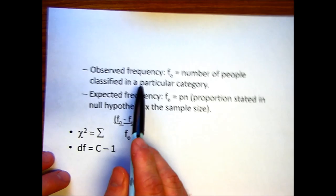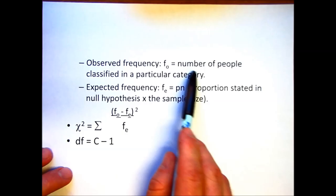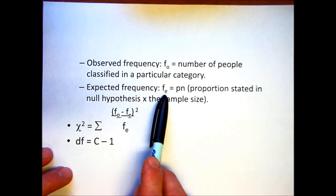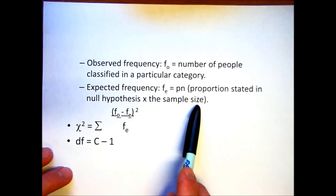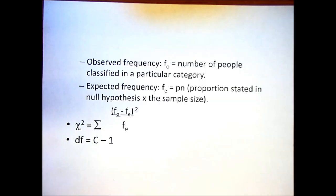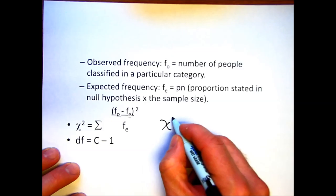And then a couple things as we work through chi-square as well is we have the observed frequencies, F sub O. Just the number of people classified in a particular category. And then we have the expected frequencies. Basically, this proportion stated in the null hypothesis times the sample size that we have. And so as I work through an example, I think this should become clear to you.